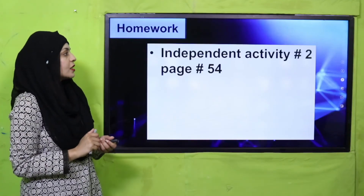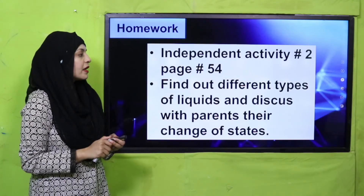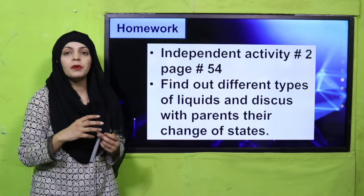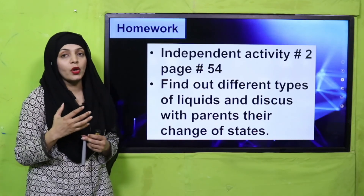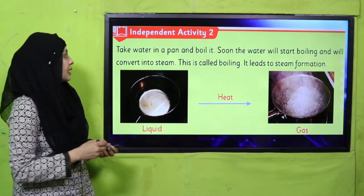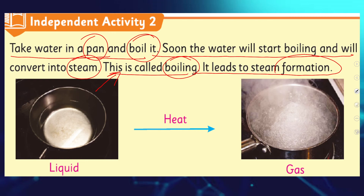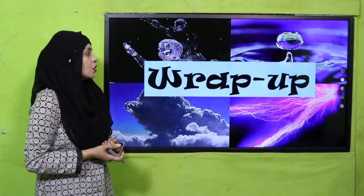For homework, you will do independent activity number two given on page number 52: find out different types of liquids — it could be juice, honey, vinegar, sauces — and discuss with your parents their change of state. For the activity: take water in a pan and boil it. Soon the water will start boiling and will convert into steam — aapko upar bhaap ati nazar ayegi. That is steam, meaning water is converting into gas — this is called boiling, leading to steam/vapor formation. Ye practical aapne apne parents ki supervision mein karni hai, you will not do it alone.